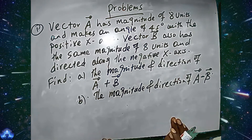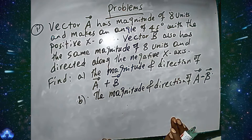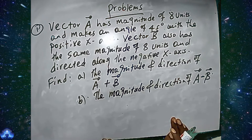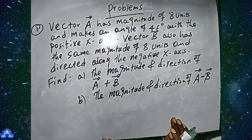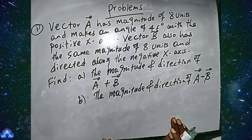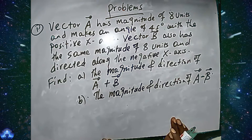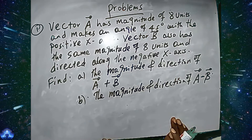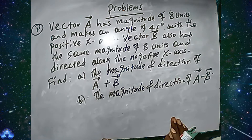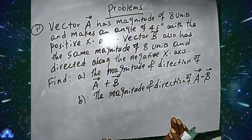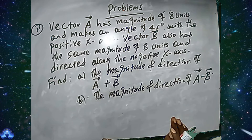Vector A has a magnitude of 8 units and makes an angle of 45 degrees with the positive x-axis. Vector B also has the same magnitude of 8 units and is directed along the negative x-axis. Find the magnitude and direction of vector A plus vector B, and the magnitude and direction of vector A minus vector B. This is a problem given in general physics for freshman students.